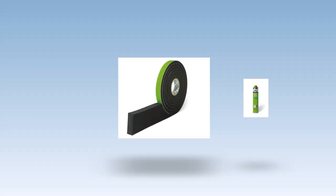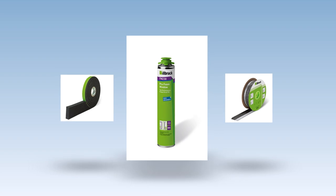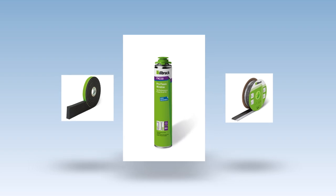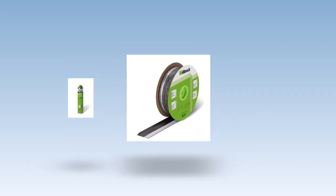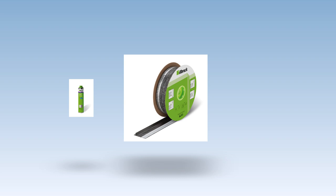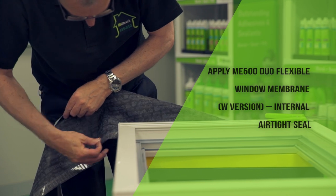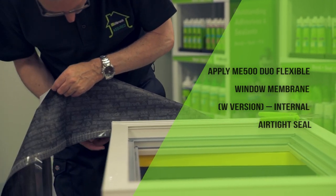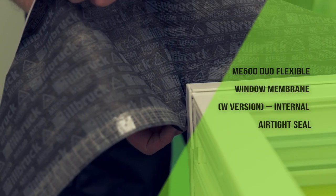The Ilbrook products to be used for this demonstration are Comproband TP600 impregnated tape as an external weather seal, FM230 ProFoam window for thermal insulation, and ME500 Duo flexible window membrane to provide air-tightness. The ME500W version includes acrylic and butyl self-adhesive strips on opposite faces of the membrane.